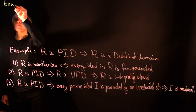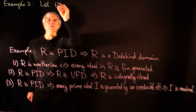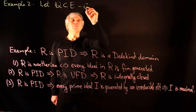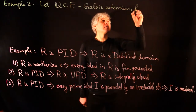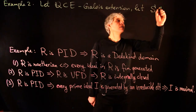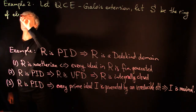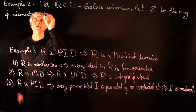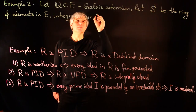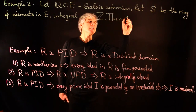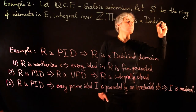Our second example: let E be a Galois extension of Q, and let S be the ring of elements in E integral over Z. Then S is a Dedekind domain.